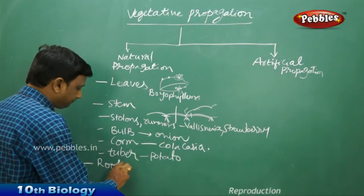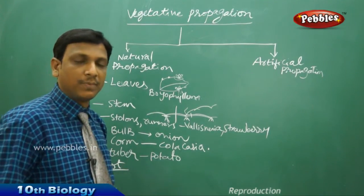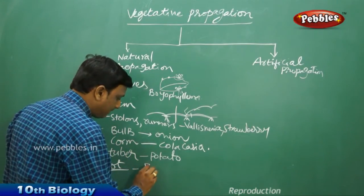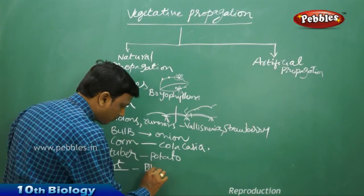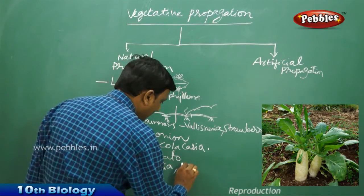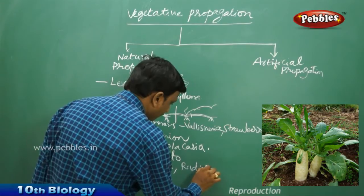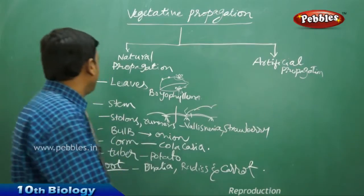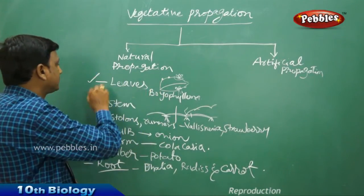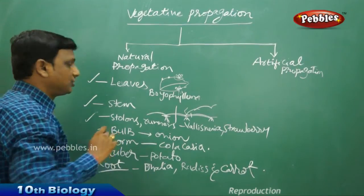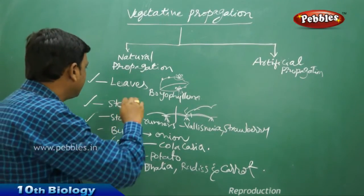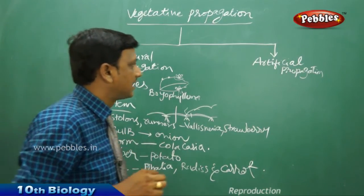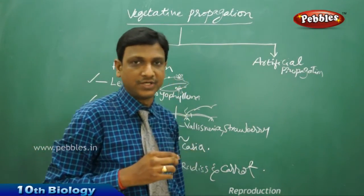These are the examples of propagation through stem. The next method is propagation by root. This is observed in the roots of dahlia, radish, and carrot. So these are the various methods of natural propagation in plants — by leaves, by stem, and by roots. Now let us see the artificial methods of vegetative propagation.